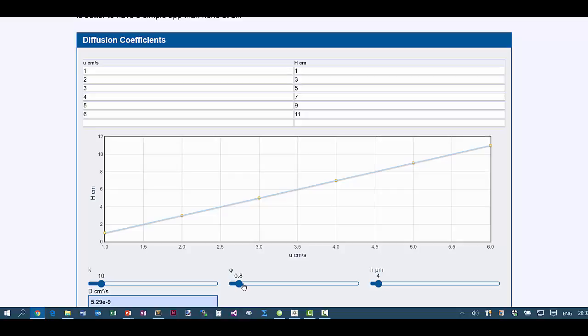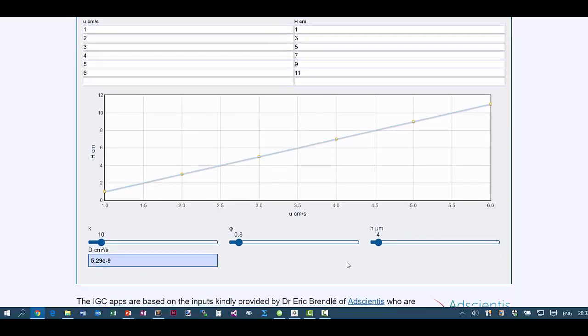And we've got this factor 0.8. And we're saying that K is 10 from measurements. And we've got 4 microns of polymer on each sphere. And the calculation therefore tells us that the diffusion coefficient is 5.3 times 10 to the minus 9 centimetres squared per second.